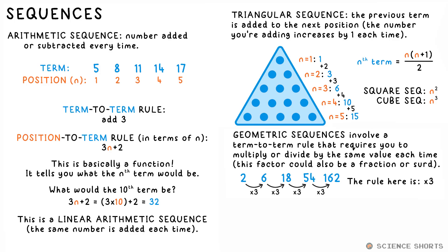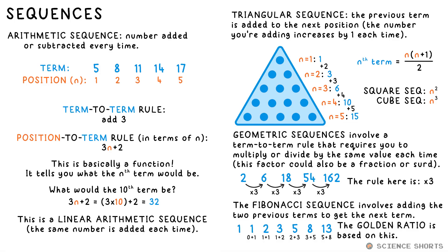Square and cube number sequences are just n squared and n cubed respectively. The Fibonacci sequence requires you to add the two previous terms to get the next one.